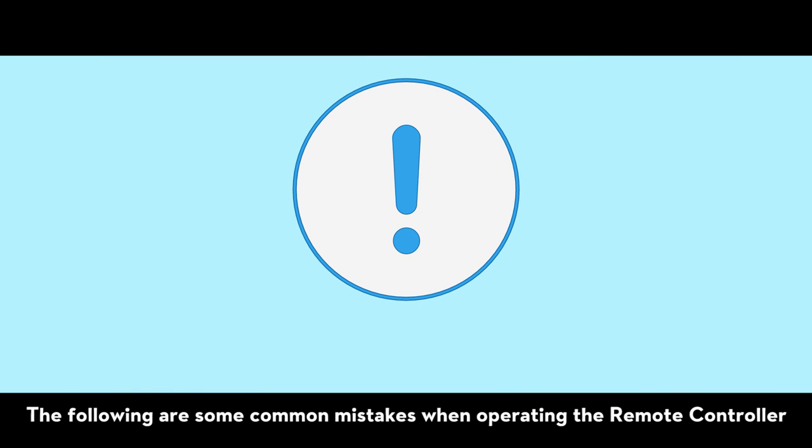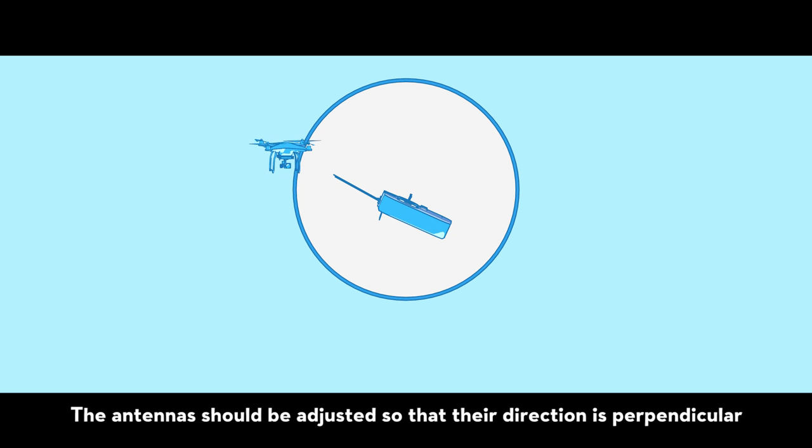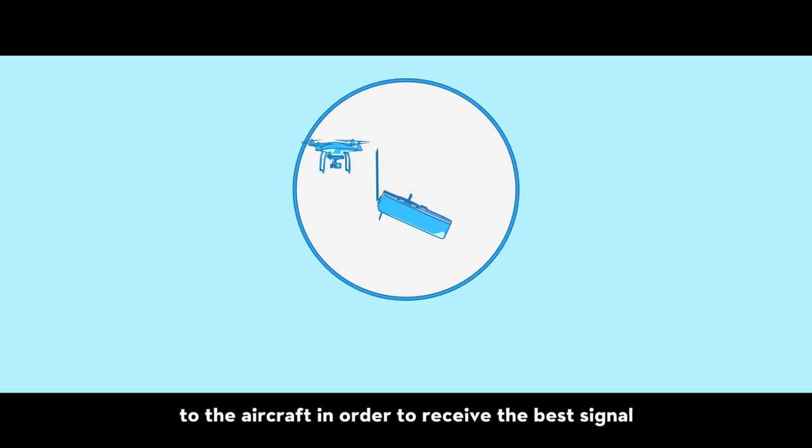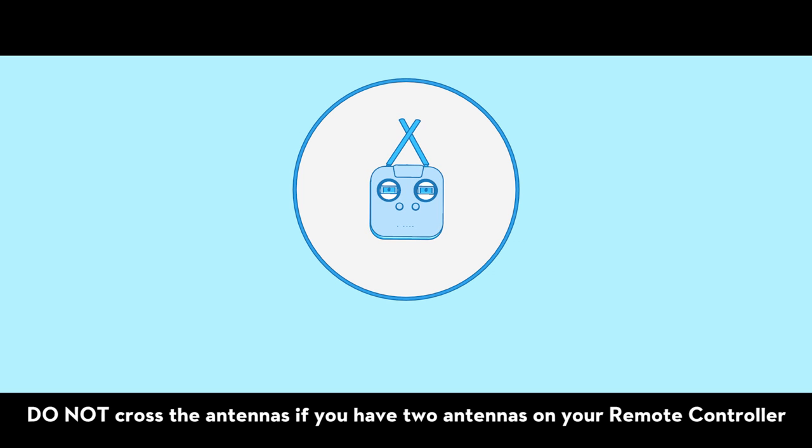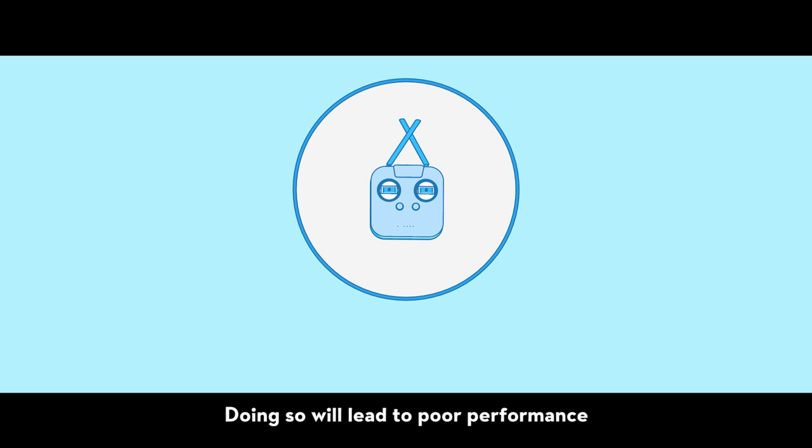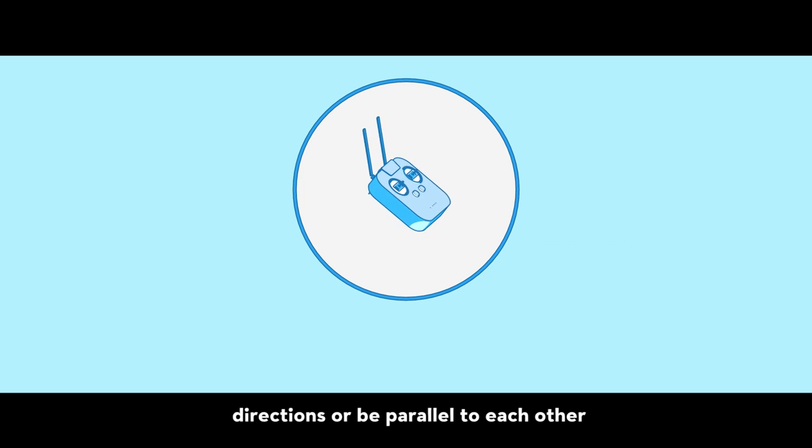The following are some common mistakes when operating the remote controller. Do not point the antennas directly towards the aircraft. The antennas should be adjusted so that their direction is perpendicular to the aircraft in order to receive the best signal. Do not cross the antennas if you have two antennas on your remote controller. Doing so will lead to poor performance. To achieve the best signal, the antennas should point in separate directions or be parallel to each other.